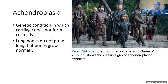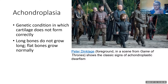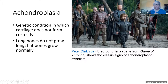This is a genetic condition in which cartilage doesn't form correctly. It could be any of, I think, around 200 different parts of genes that can contribute to this, and there are a bunch of different forms — some more serious than others. Peter Dinklage, who was in Game of Thrones, is one of the most famous achondroplastic dwarfs today.